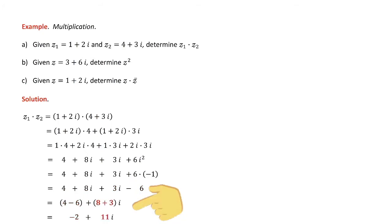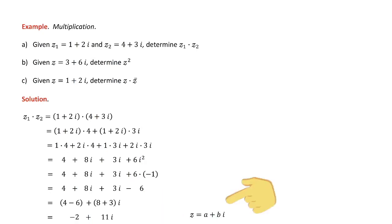Replace i squared with minus one. Six times minus one is minus six. Put the real parts together and the imaginary parts together, just as before. So that's my a and that's my b — it has the right form. You always expect to see i squared when multiplying. If you don't, you've made a mistake. A is minus two, b is eleven — good to go.